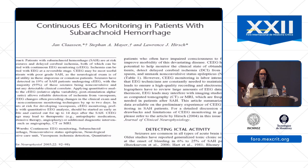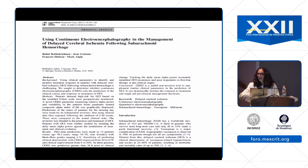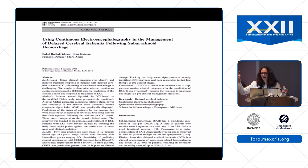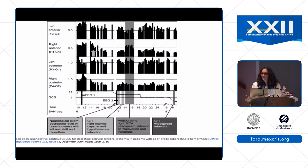When patients were developing vasospasm or DCI, the EEG rhythm changed from alpha to delta, and this alpha-to-delta change happened well before patients became neurologically symptomatic. With continuous EEG monitoring, you can quantify the composite alpha index or the alpha-delta ratio — as delta goes up and alpha comes down — to predict which patients are at risk and probably need to be treated sooner.